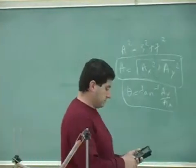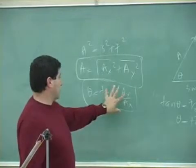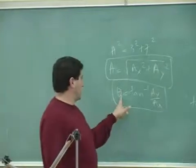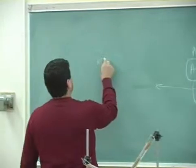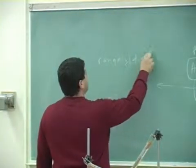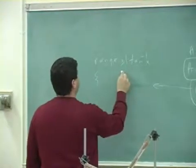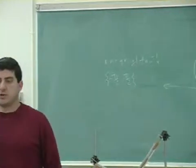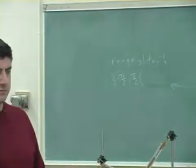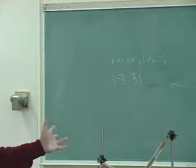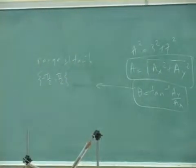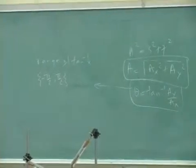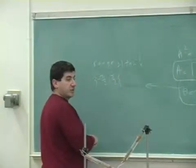Now there are some cases where you have to be careful. The range of the tan inverse function is negative 90 to 90 degrees. The domain of tan inverse is all real numbers — you can put anything in because tangent ranges from negative infinity to positive infinity. So the calculator will never say undefined for tan inverse, but the problem is the range is only negative pi over 2 to pi over 2.